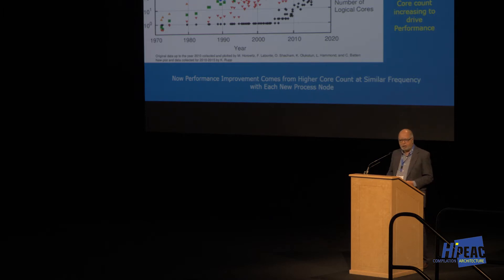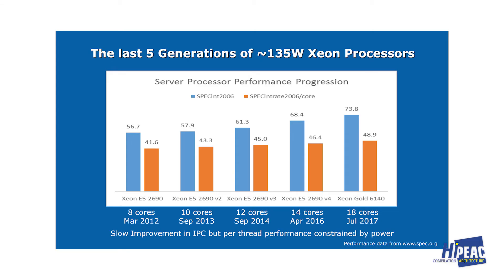I took the last five generations of Intel Xeon processors, starting with Sandy Bridge in 2012 all the way to Skylake, which was announced in July — all 135-watt Xeon processors. At the same power, the single-thread performance went up very gradually, while core counts went from eight with Sandy Bridge up to 18.